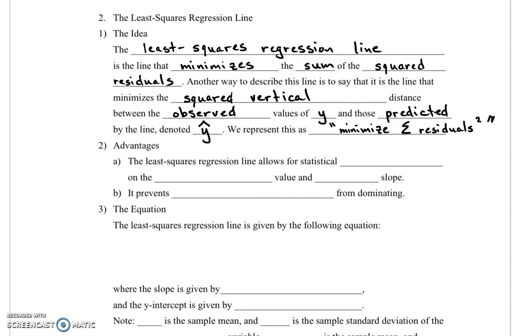There are several advantages to the least squares regression line. One is that it allows for statistical inference on the predicted value and the slope of the line. The other advantage is that it prevents extreme values from dominating.